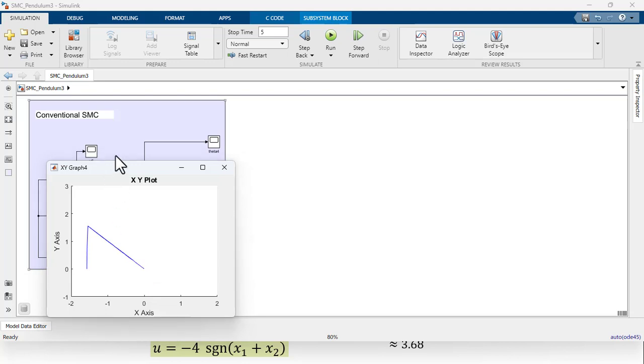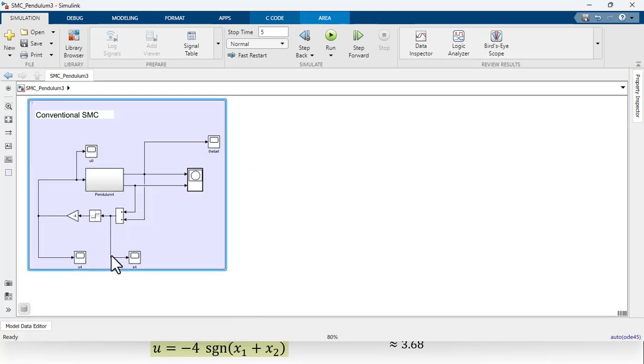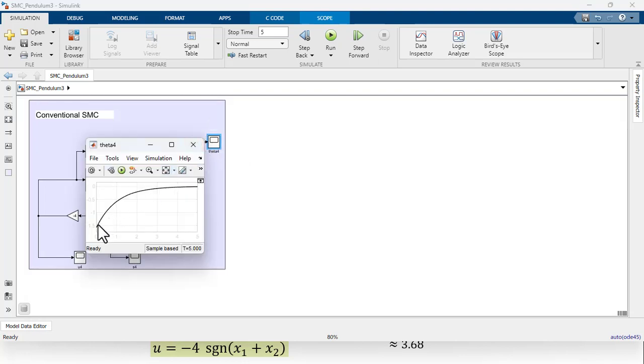I have also plotted the variable theta, the angular position that is shown over here. This angular position finally reaches to 0, which is the desired position.